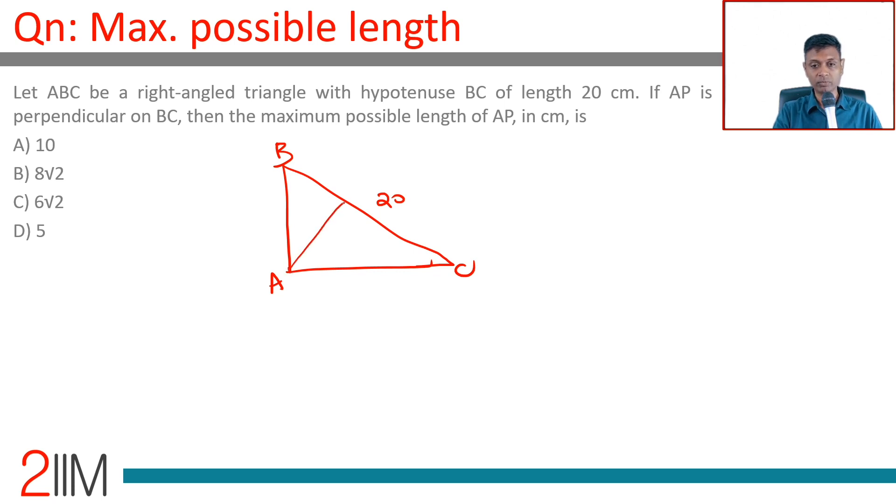The maximum possible length will be when it is an isosceles right angle triangle, when this is 10 root 2. This is 10 root 2, and this will be half of 20, which is 10 units.